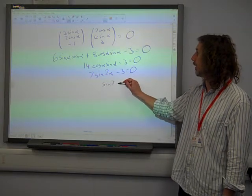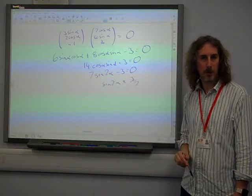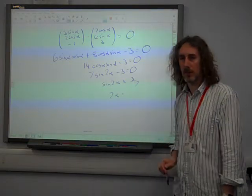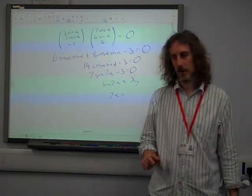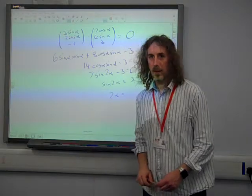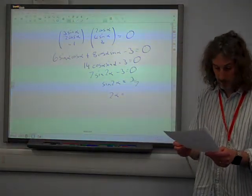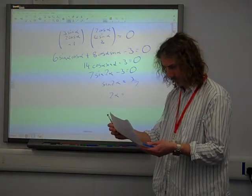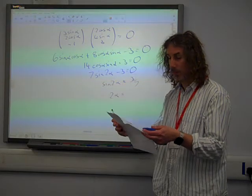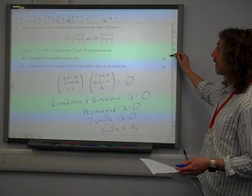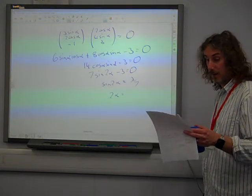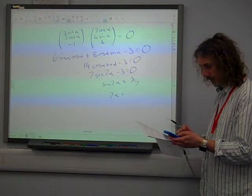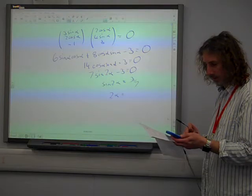Giving us sine two alpha equals three-sevenths, and we're happy with how this has worked out so far. So if we do inverse sine of three-sevenths, they want it in degrees. It gives us 25.38, doesn't it?